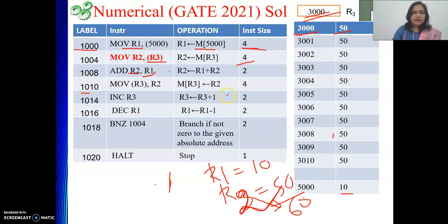Then what we are doing? Move R2's content to memory location pointed by R3. R3 is pointing to 3000. So this value will become 60.